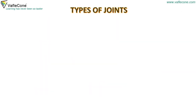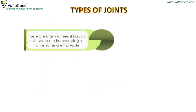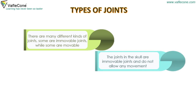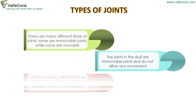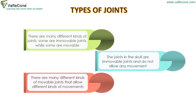Types of Joints. There are many different kinds of joints. Some are immovable joints while some are movable. The joints in the skull are immovable joints and do not allow any movement. There are many different kinds of movable joints that allow different kinds of movements.